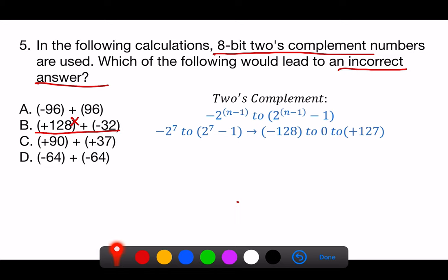Here's why the other options would not necessarily lead to an incorrect answer. A, minus 96 plus 96. Both minus 96 and plus 96 can be represented in 8-bit 2's complement, and their sum is 0, which is well within the representable range.